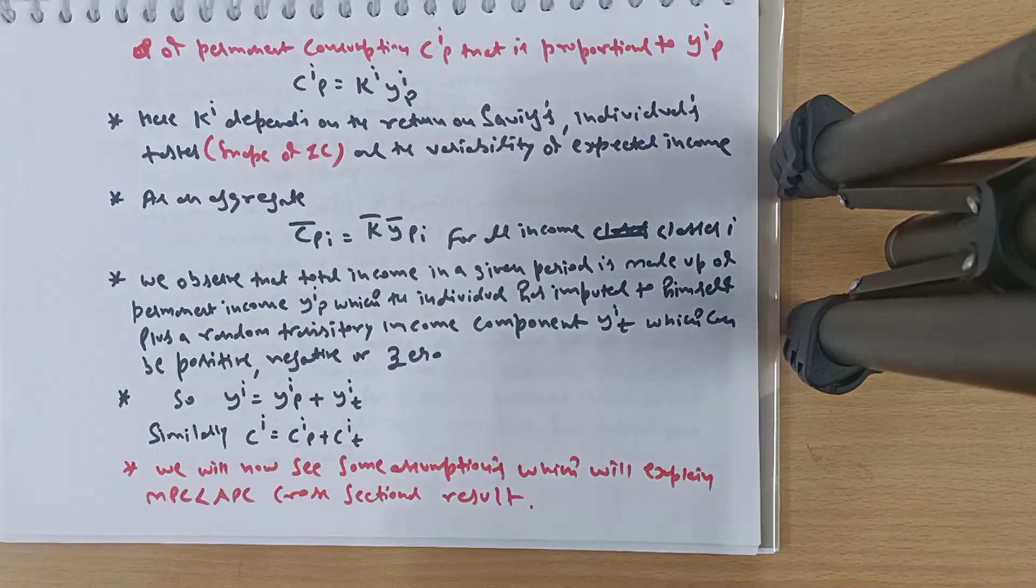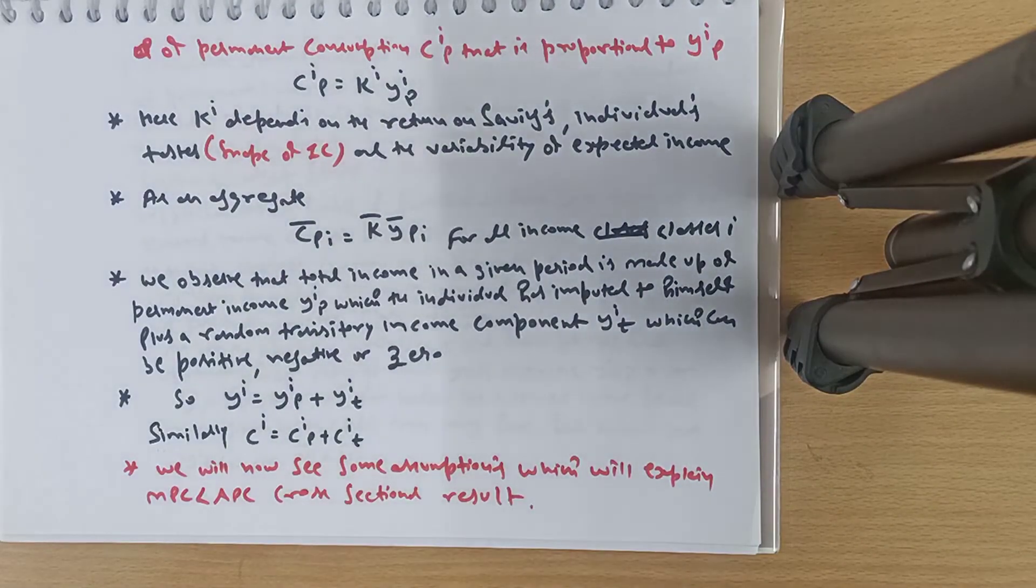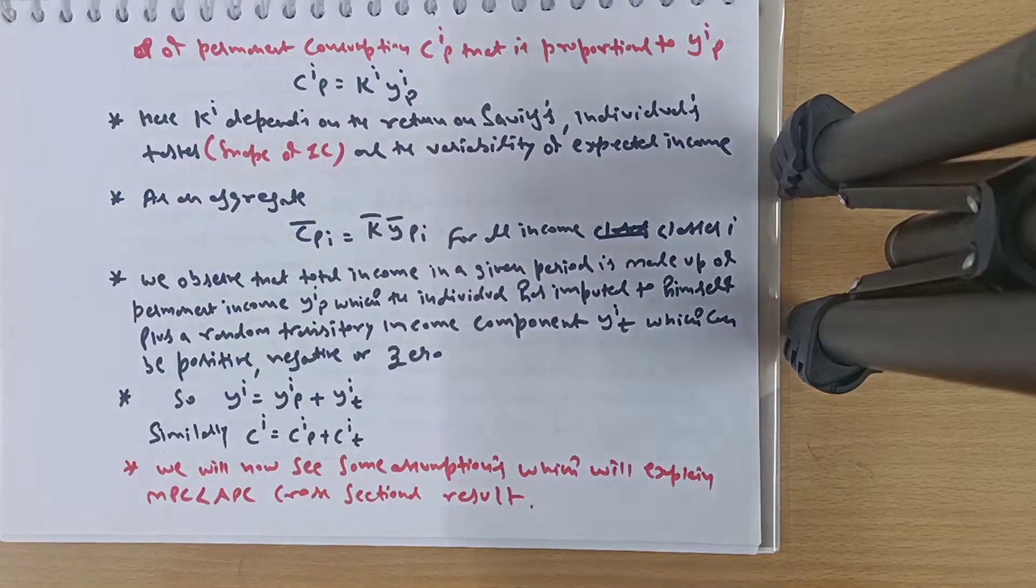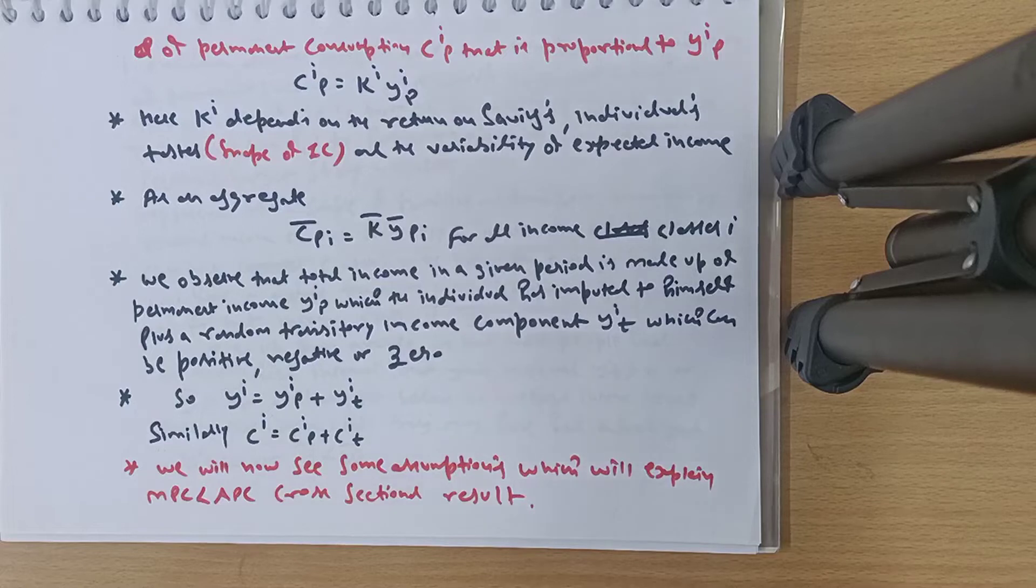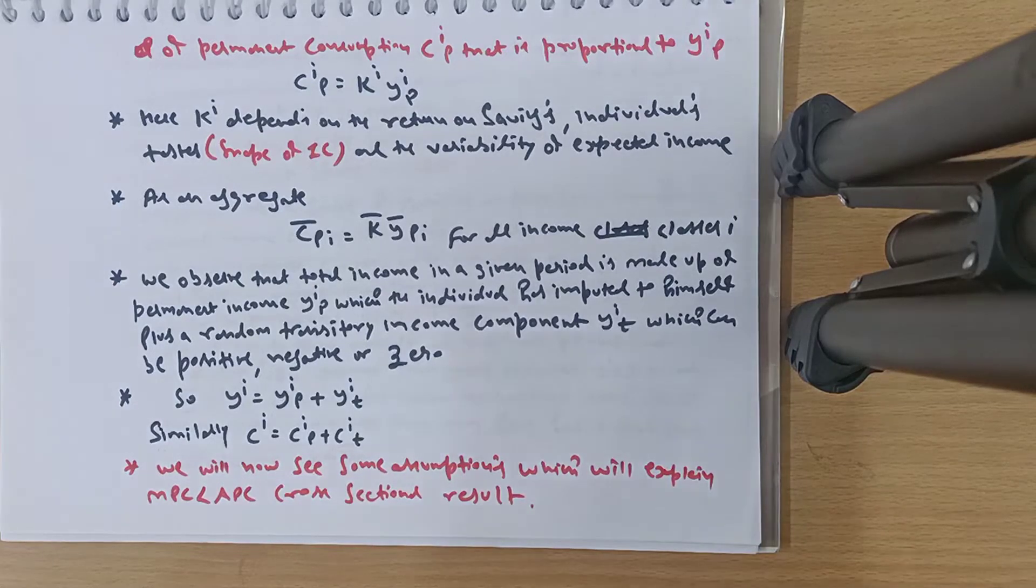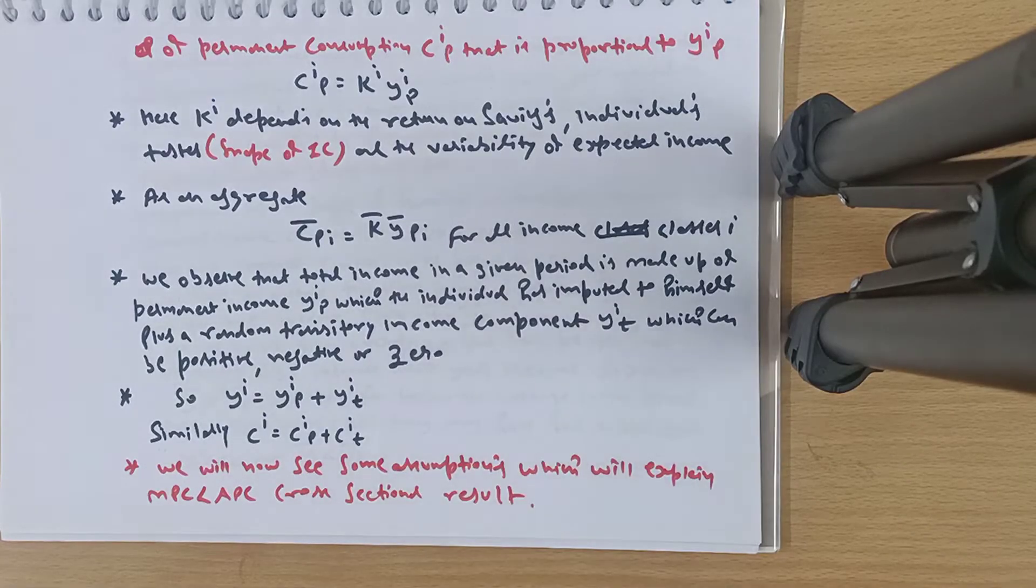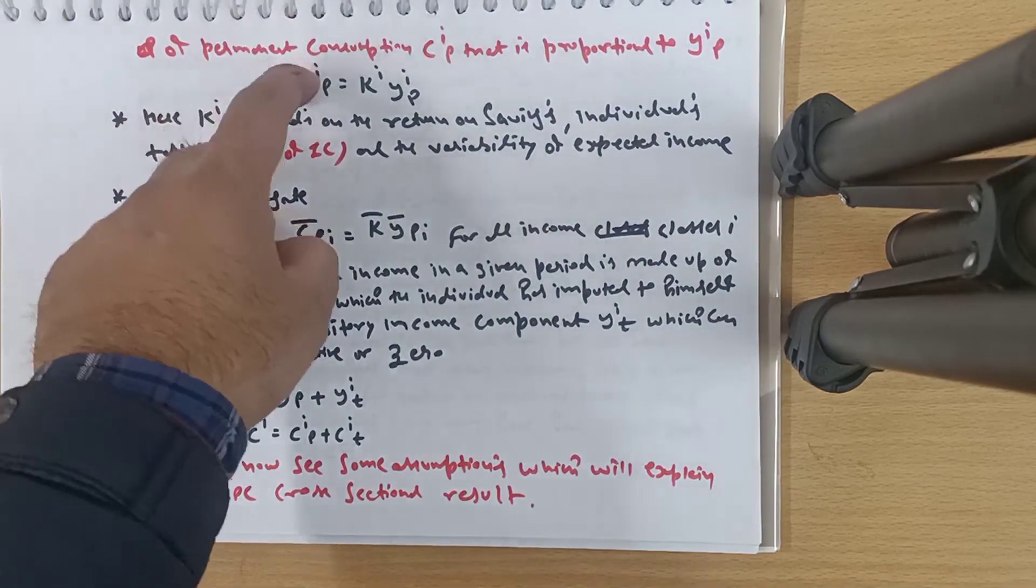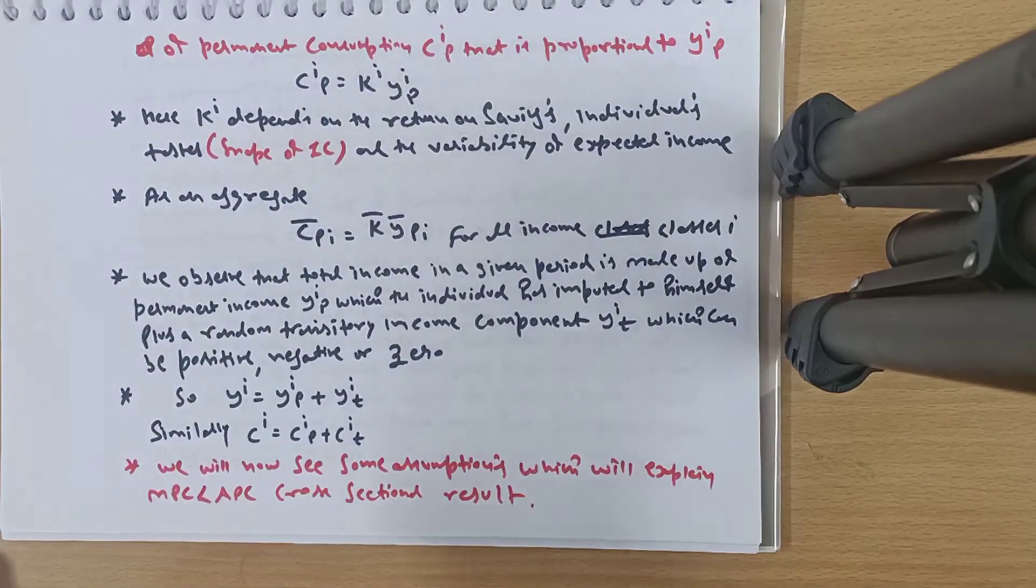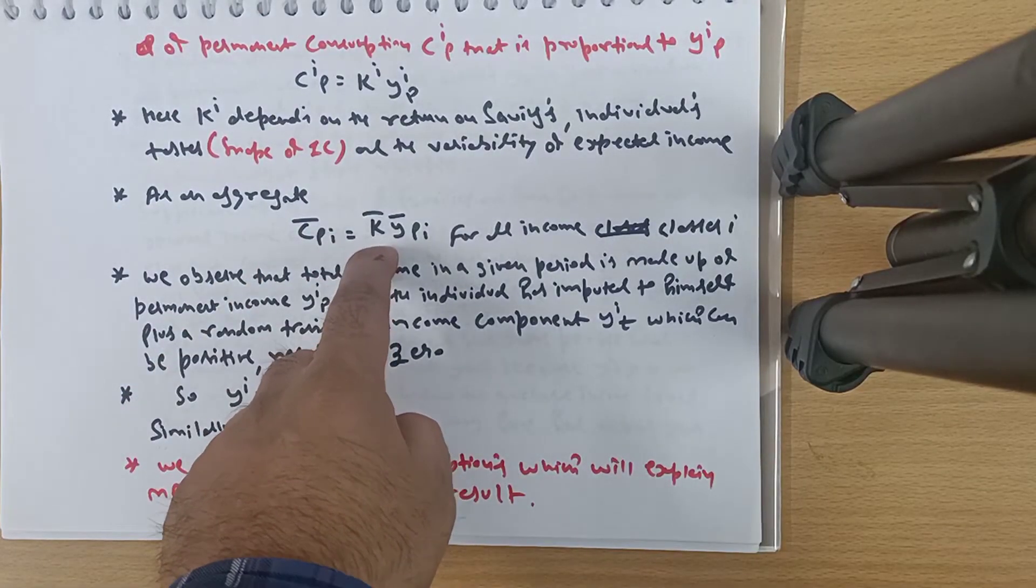Here ki depends on the returns on saving, individual taste, and the variability of expected income. So your k value, which we assume is 0.8, could have been 0.6 or 0.9. The value depends on how much interest you get on savings, your taste preferences regarding present or future consumption, and what you expect regarding future income. If you take this for the aggregate rather than a particular income group, we can write C̄p = k̄ × Ȳp for all income classes i.